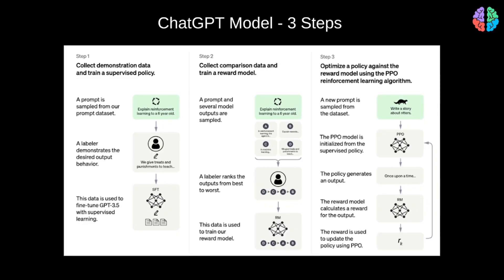With that understanding of reinforcement learning with human feedback and alignment, let's go into ChatGPT. There are clearly three steps in the figure from the OpenAI blog. The model architecture is the same as InstructGPT but with GPT 3.5 in place of GPT 3. In step one, they fine-tune the GPT model for a question-answering task. In step two, they train a reward model. And in step three, they use reinforcement learning to train both models from steps one and two together, iteratively.